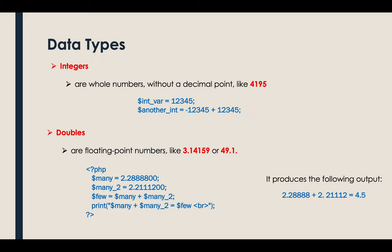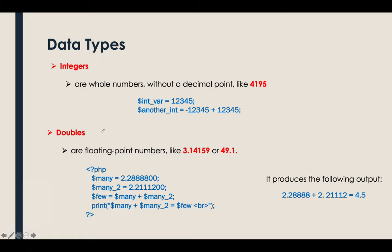First, we need to discuss about integers. If we talk about integers, they are basically whole numbers without any decimal point. A good example for this one is 4,195.